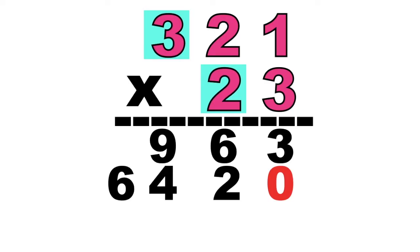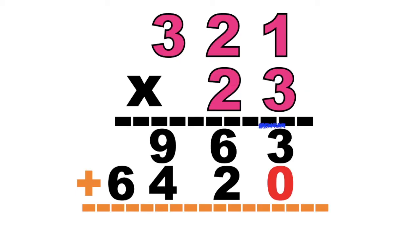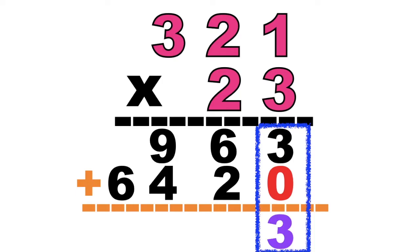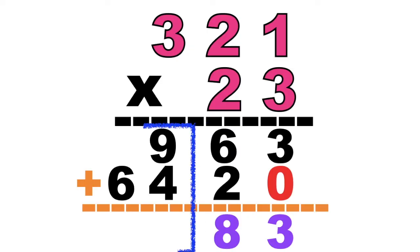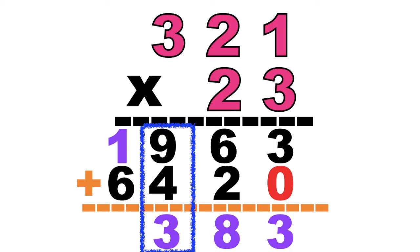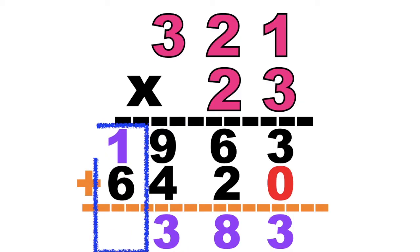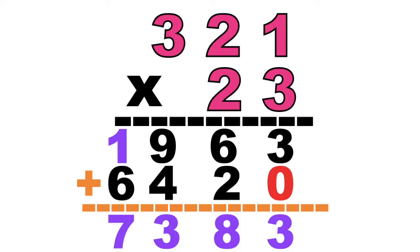So now we can add the partial products. 3 plus 0 equals? Good job, children. It's 3. Next, 6 plus 2 equals? Fantastic! It's 8. How about 9 plus 4 equals? Good job! It's 13. So we will carry 1 to the 1000s place. 1 plus 6 equals? Good job! It's 7. So the product of 321 and 23 is 7,383.